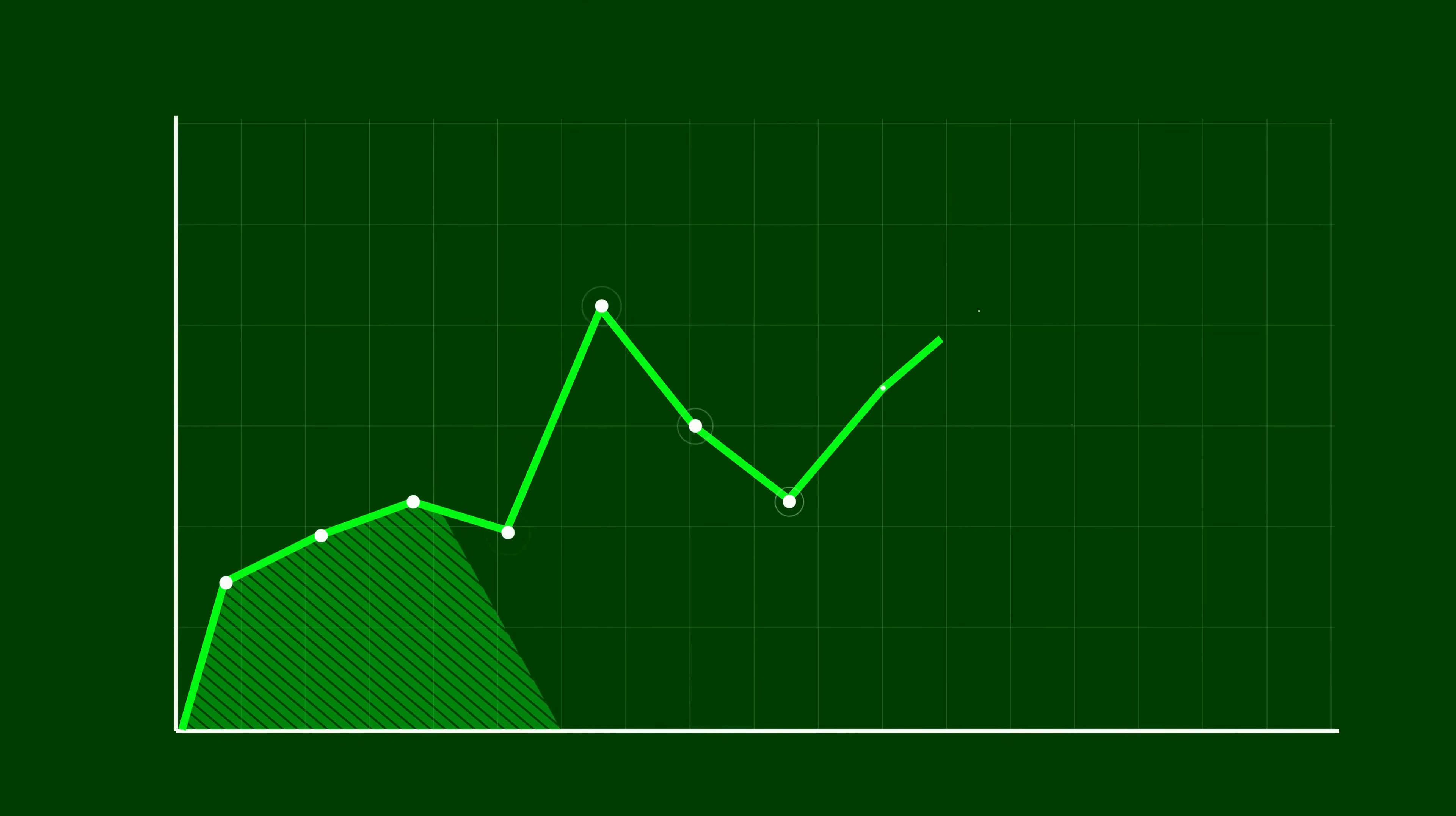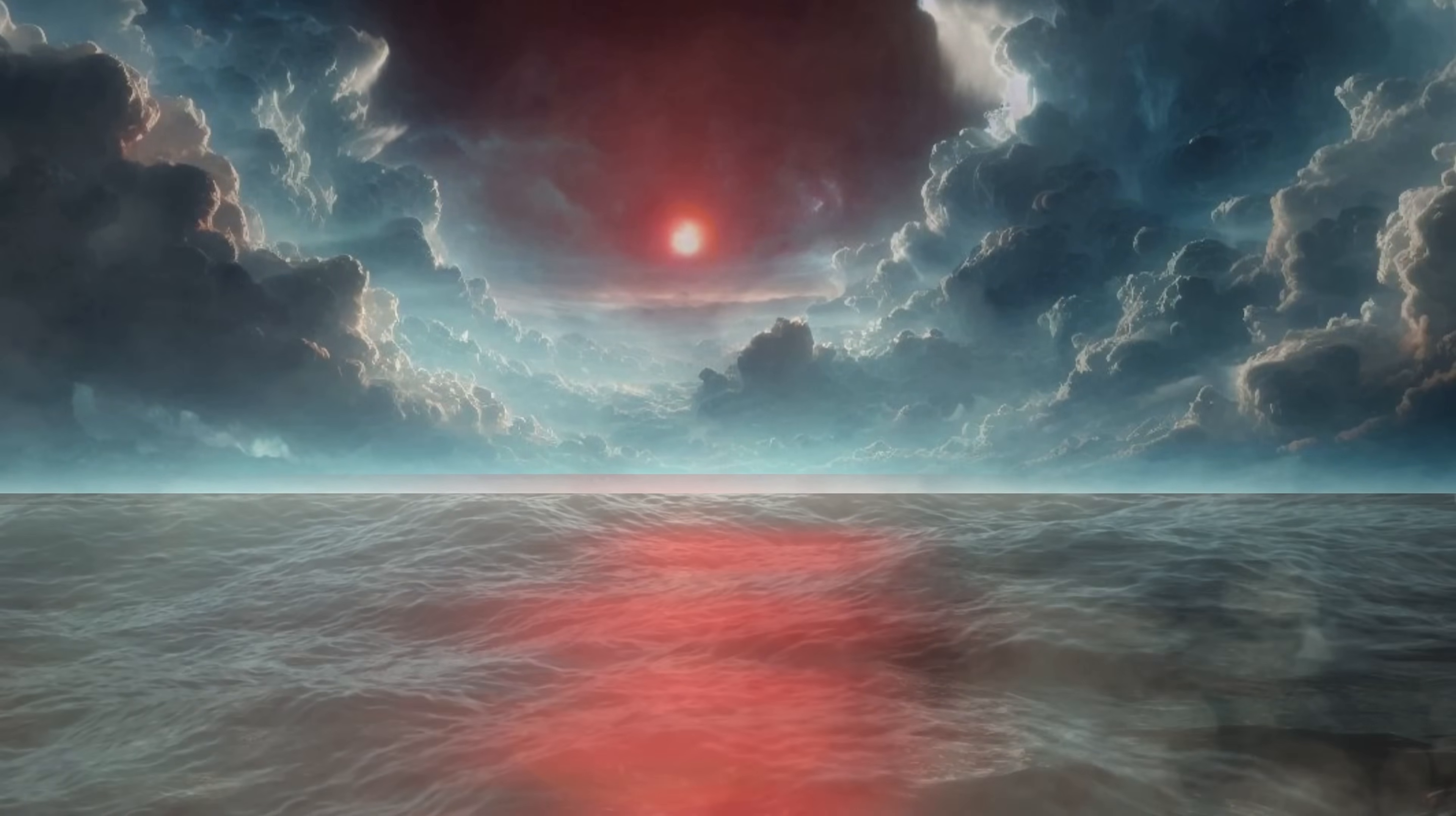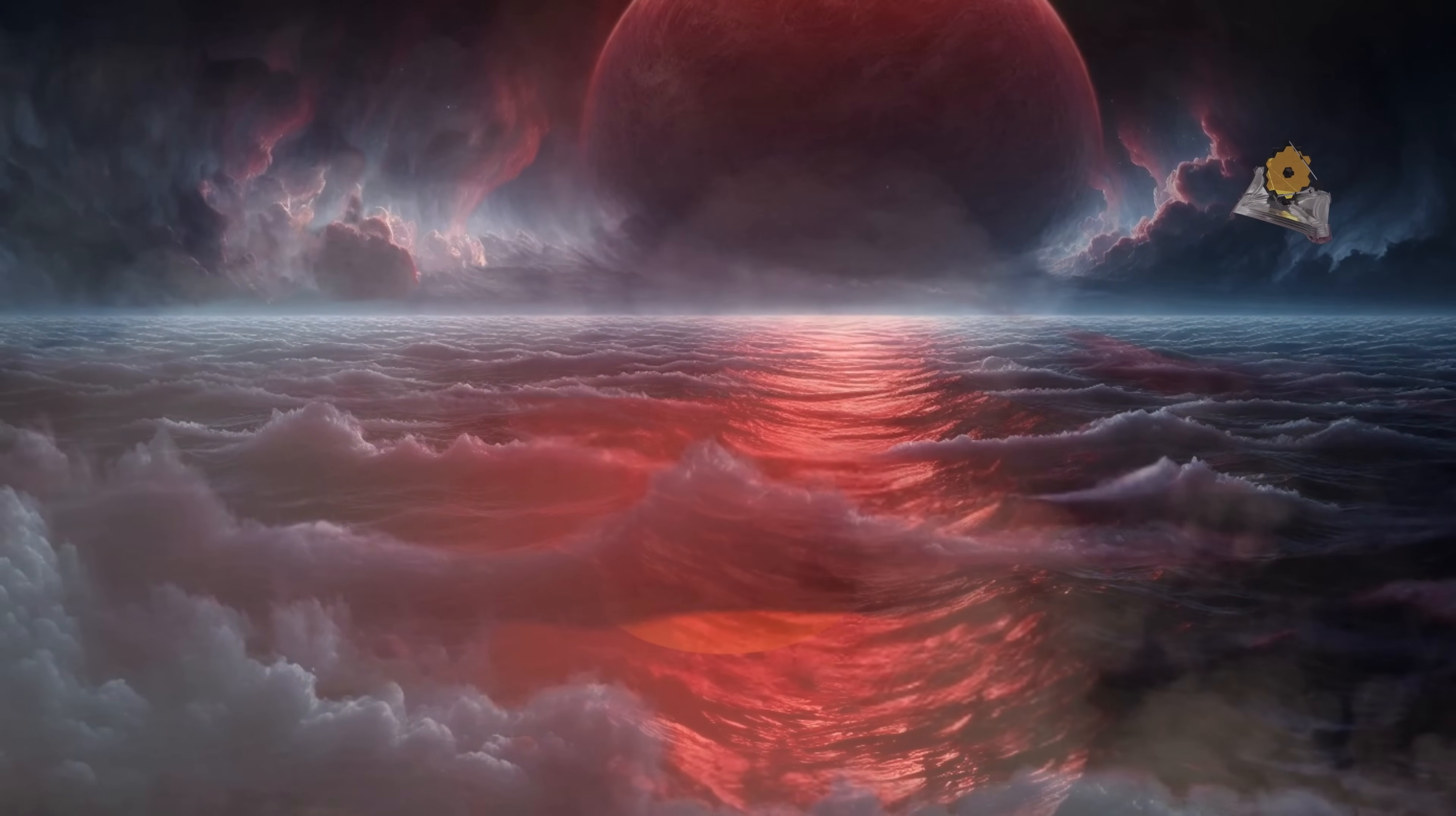But the skeptics raise valid issues. K-218b is a huge planet with a potentially crushing atmosphere. The high pressures and temperatures could make it too harsh for life to exist, even in the presence of water. These harsh conditions might make the planet uninhabitable despite the interesting chemical clues.